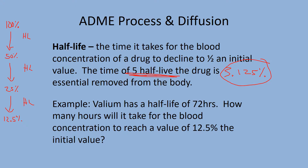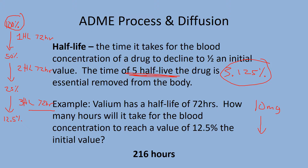Example: Valium has a real half-life of 72 hours. How many hours would it take for blood concentration to reach 2.5% of the initial value? After three half-lives — 72 + 72 + 72 hours — you'd be at 12.5%. Valium has a very long half-life; if you took 10 mg today, three days later you'd still have 5 mg in your system.